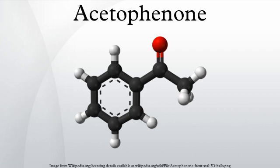Acetophenone is an ingredient in fragrances that resemble almond, cherry, honeysuckle, jasmine, and strawberry. It is used in chewing gum, and is also listed as an approved excipient by the US FDA. In a 1994 report released by five top cigarette companies in the US, acetophenone was listed as one of the 599 additives to cigarettes.